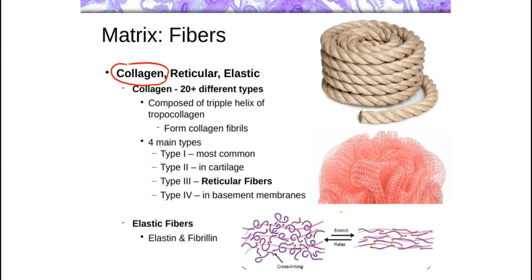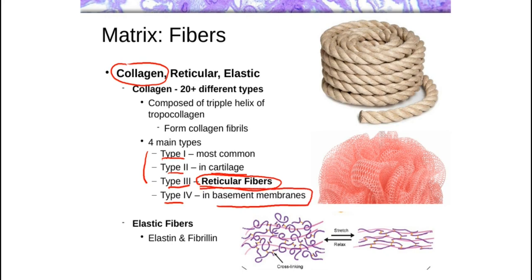When you talk about collagen, we're talking about a fairly wide variety of different things. We generally focus on type 1 collagen, which is the most common. Type 2 collagen is generally just found in cartilage. Type 3 collagen forms the reticular fibers just mentioned and is often given its own separate category. Those are the three main ones found in connective tissues. Type 4 collagen is found in basement membranes when we talk about epithelium.